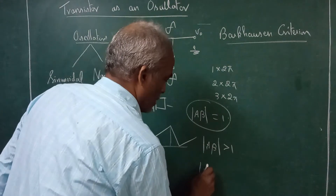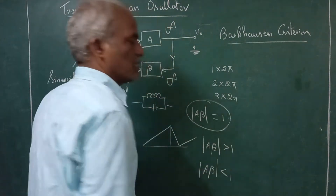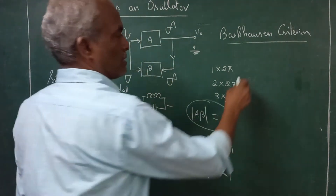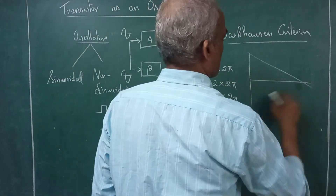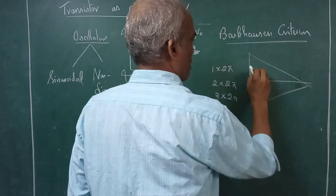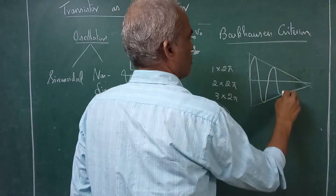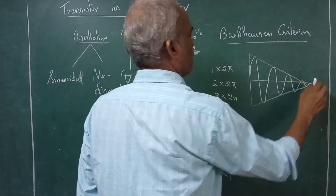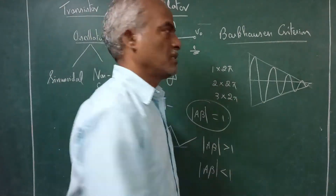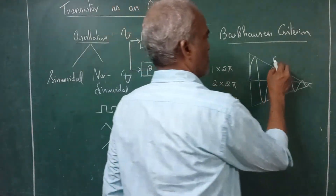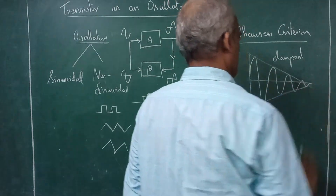Suppose the magnitude of Aβ is less than 1 — it will produce damped oscillation. What is a damped oscillation? The signal will die. The amplitude keeps on decreasing and finally comes to zero. This is called damped oscillations.